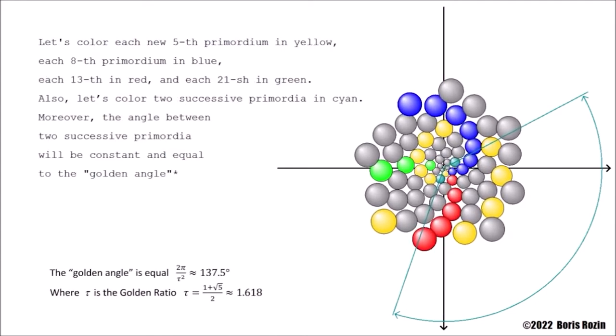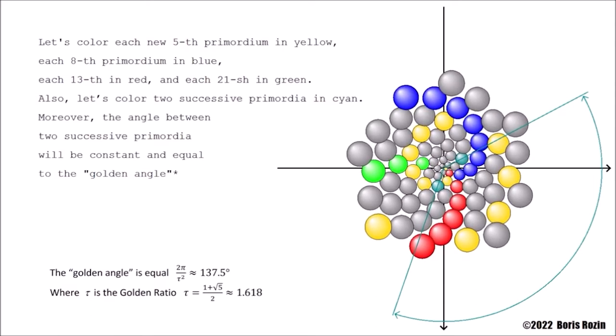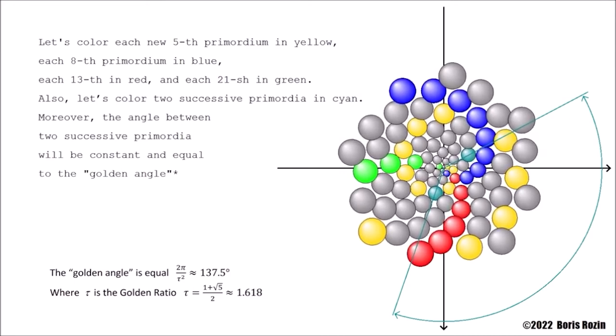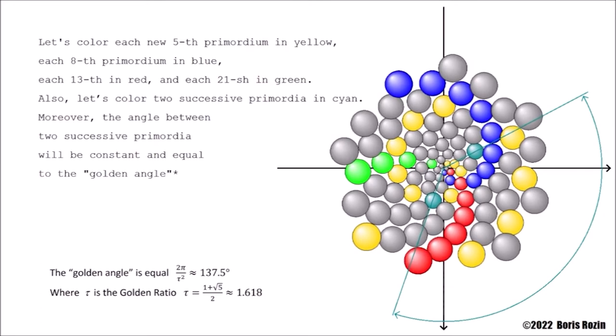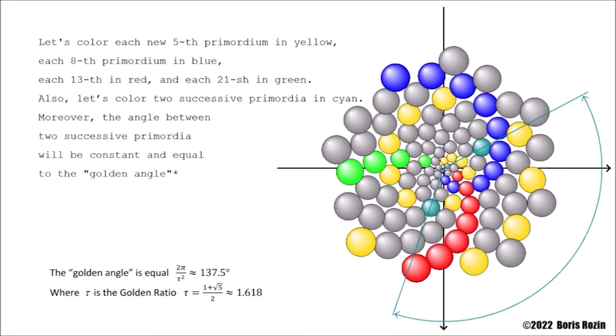Let's color each new 5th primordium in yellow, each 8th primordium in blue, each 13th in red, and each 21st in green. Also, let's color two successive primordia in cyan. Moreover, the angle between two successive primordia will be constant and equal to the golden angle.